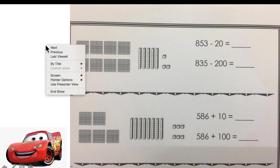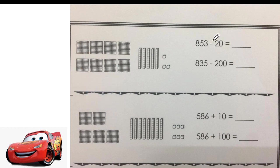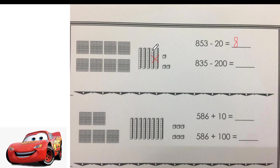Once again, if you want to work alone, please do so. If you want to work with me, work with me. 853 take away 20. 20 means how many tens we will take away? Two tens. Cross them away. What happens to hundreds? Nothing — 800 will stay the same. How many tens will you have left? Three tens only — write three in the middle.